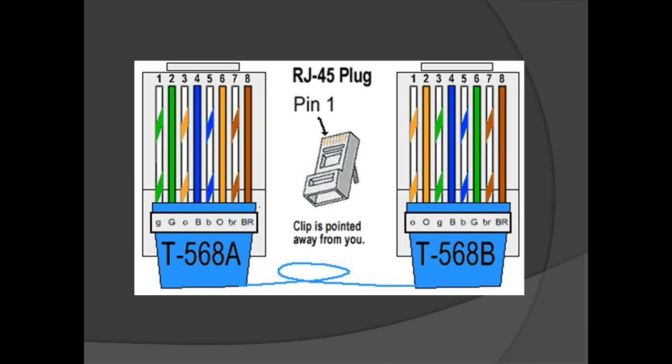For T568A, the pin order is: white-green, green, white-orange, blue, white-blue, orange, white-brown, brown. For T568B, the pin order is: white-orange, orange, white-green, blue, white-blue, green, white-brown, brown. Always remember that the pins should be facing toward you when you are crimping RJ45.